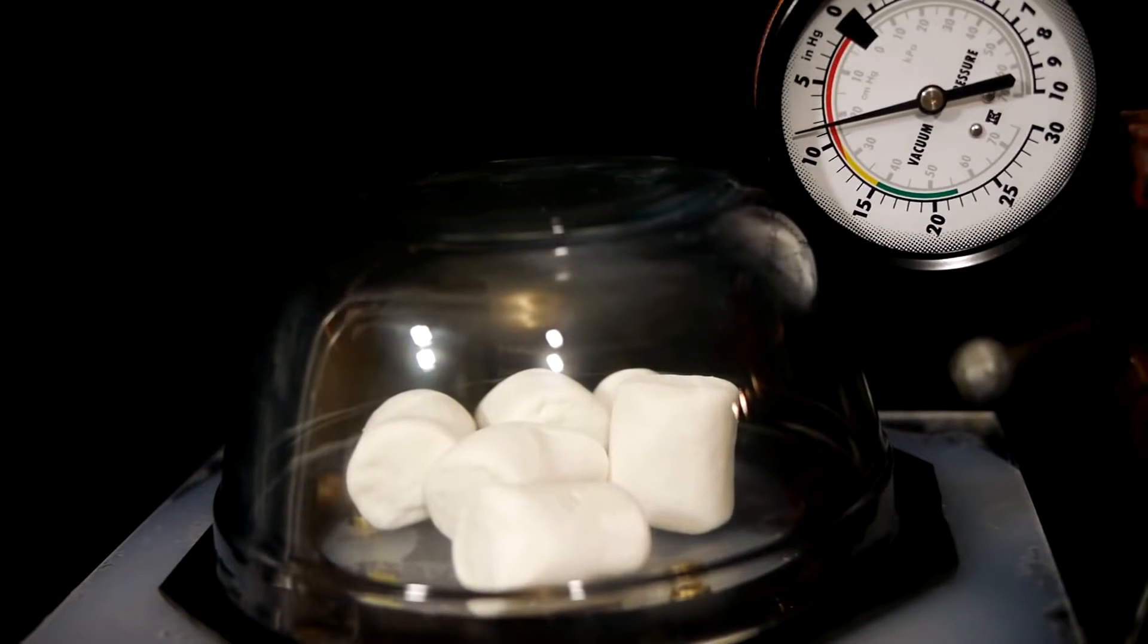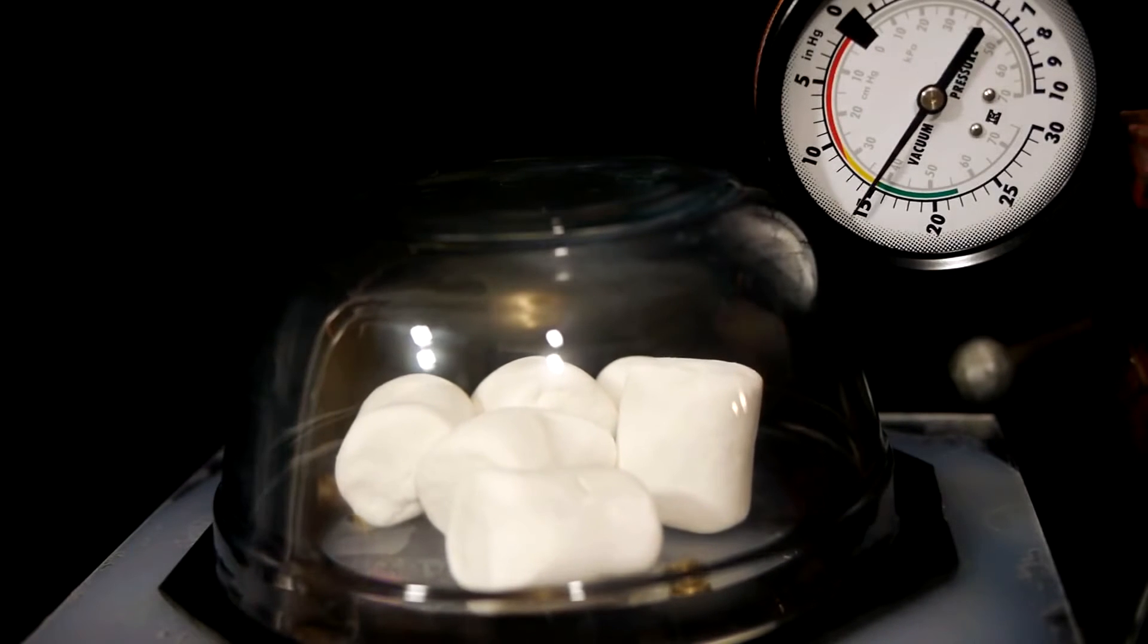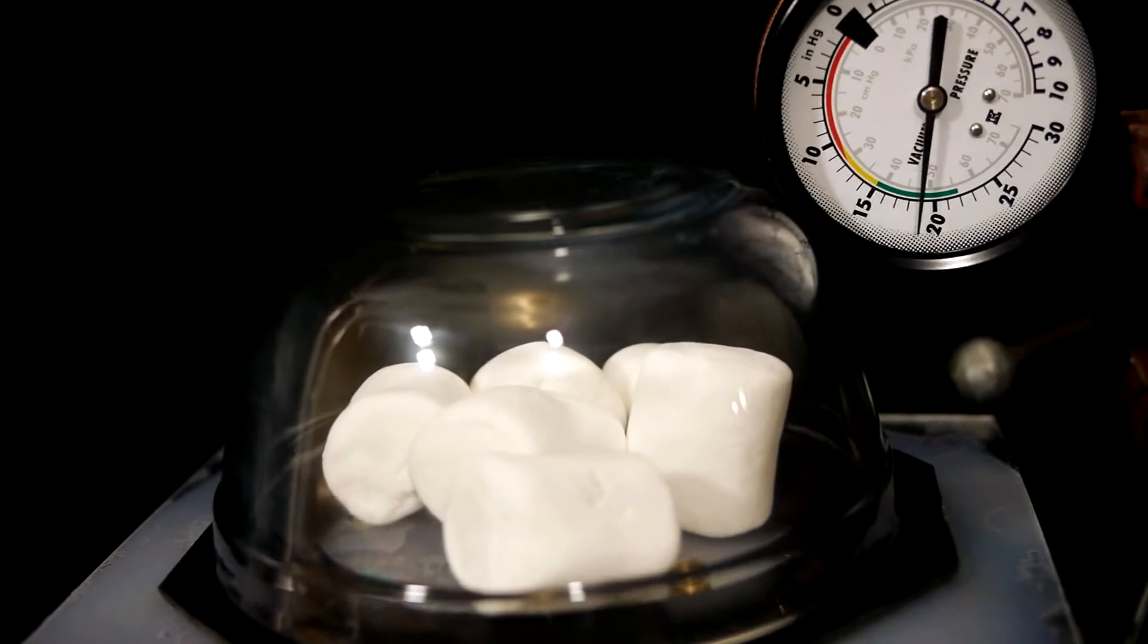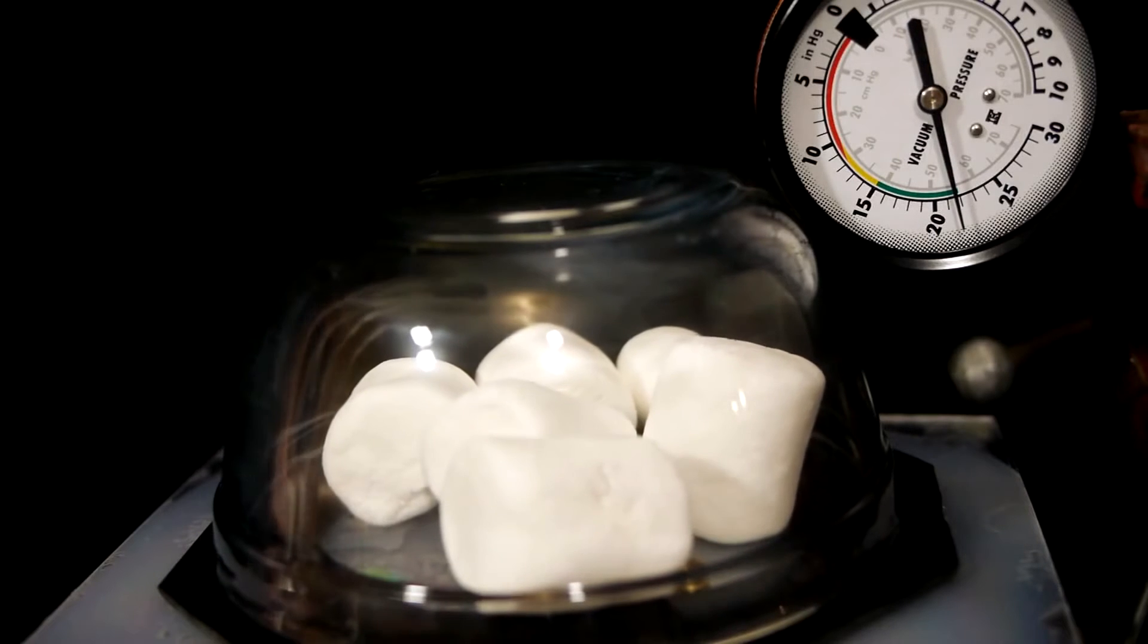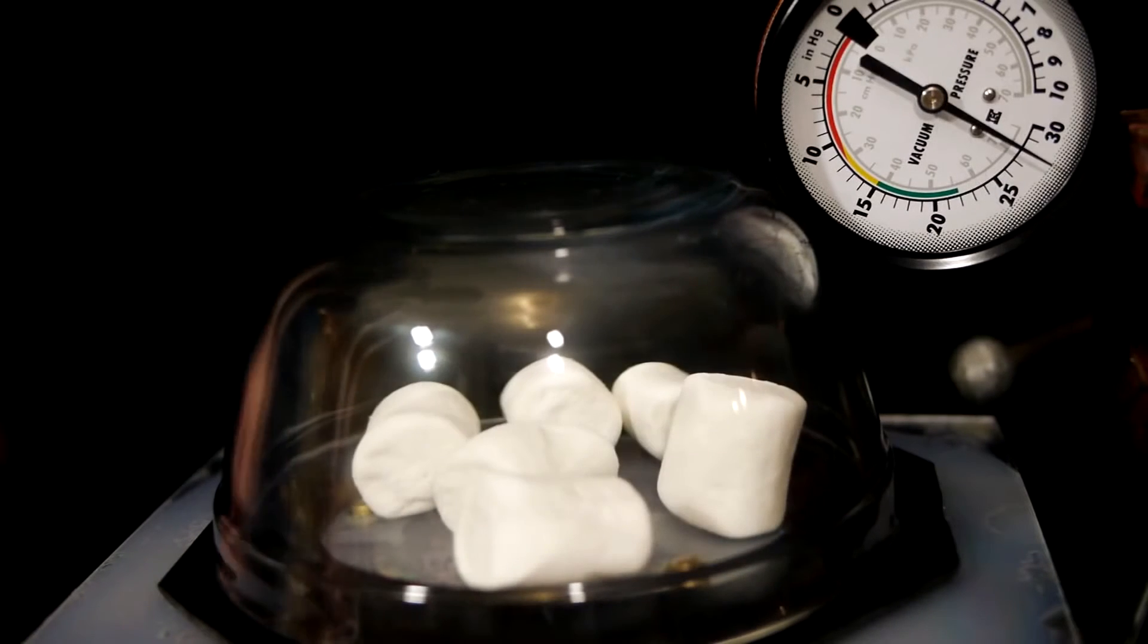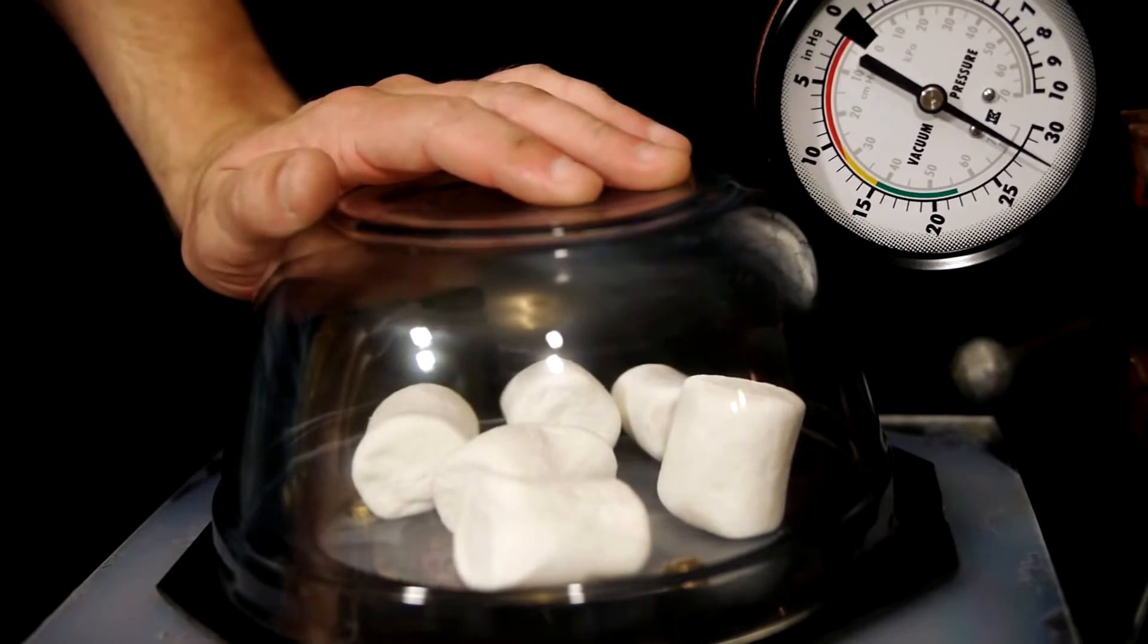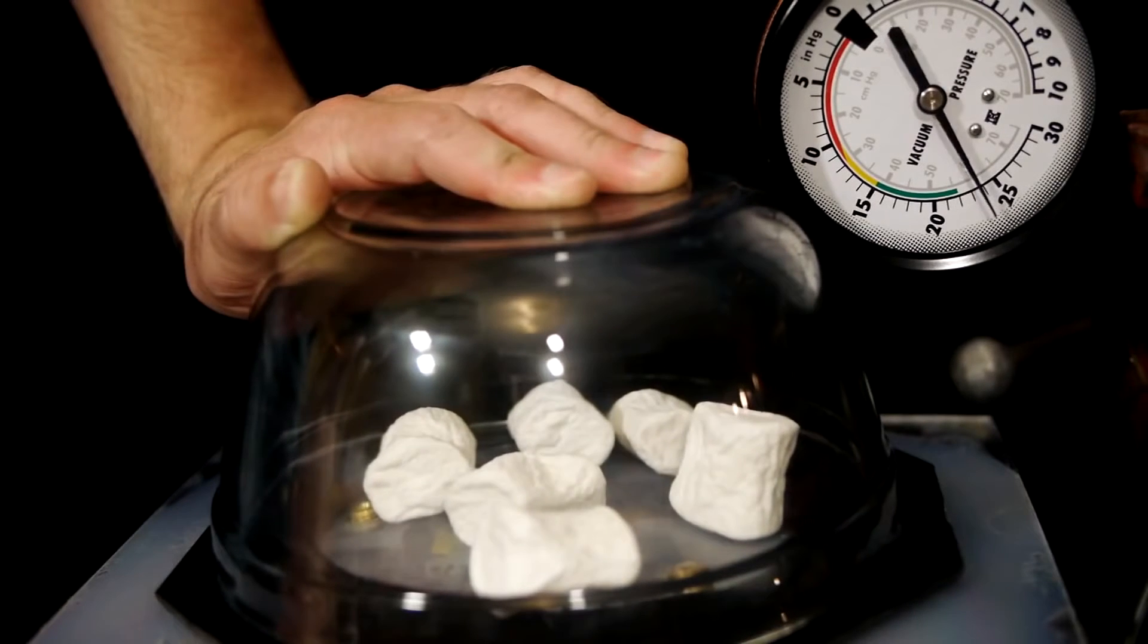Pulling the air out of marshmallows is a common demonstration of vacuum pressure. They first expand as air escapes from inside of them, then when once again exposed to normal pressure, the marshmallows will collapse in on themselves because the air bubbles within have been emptied.